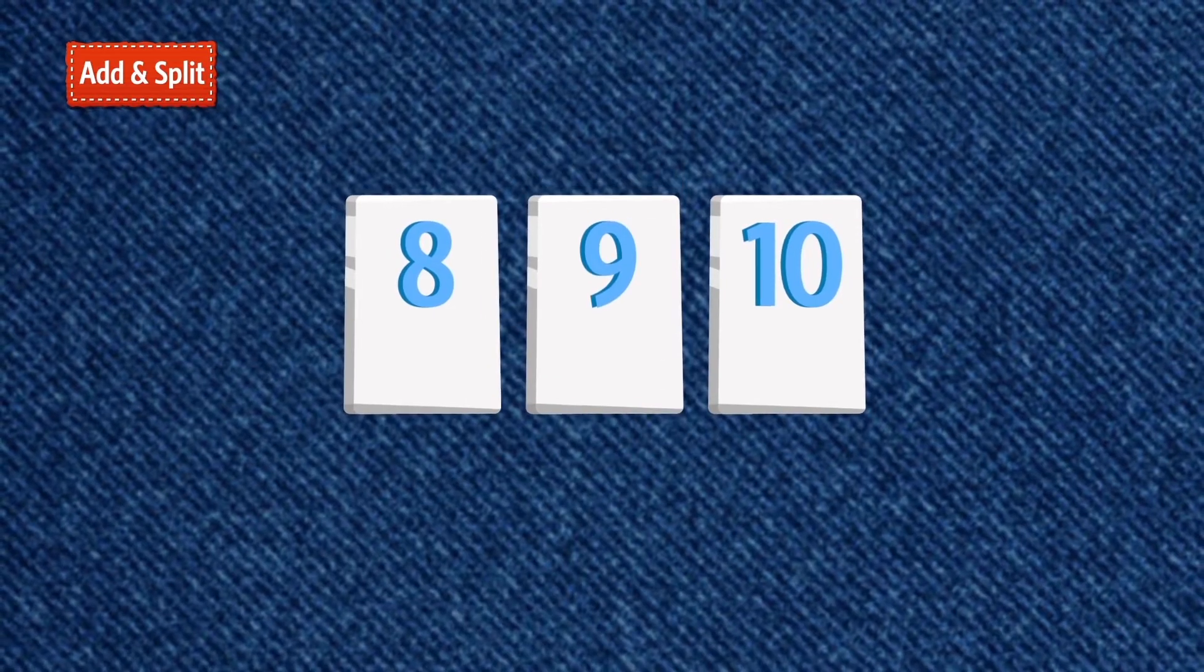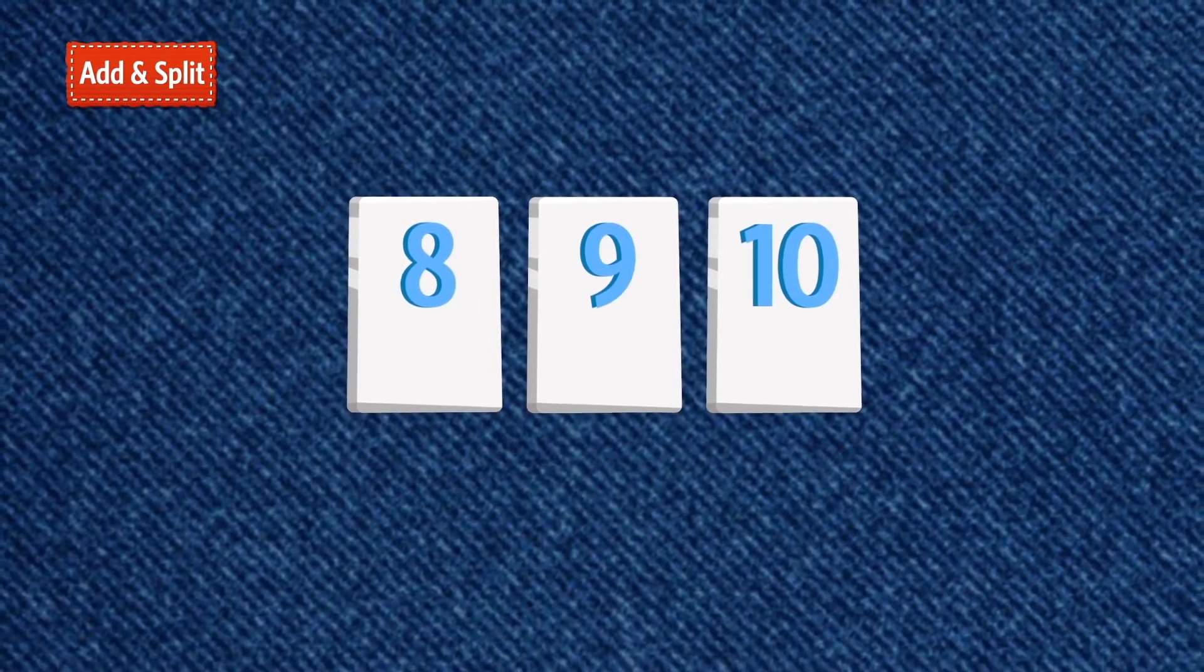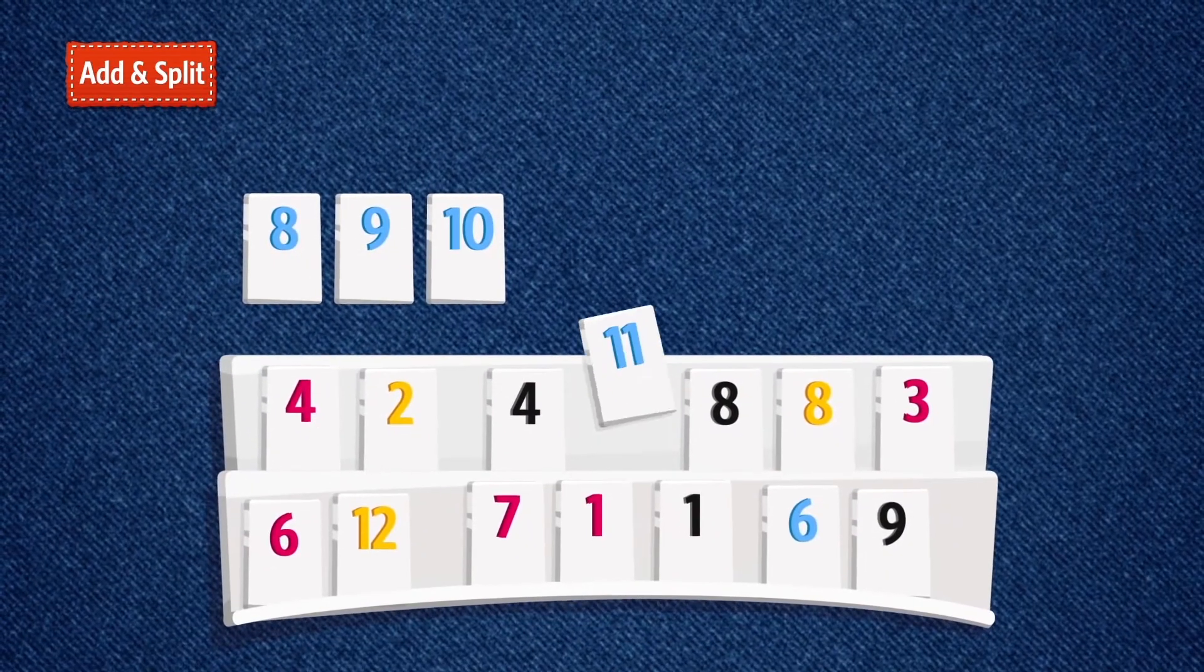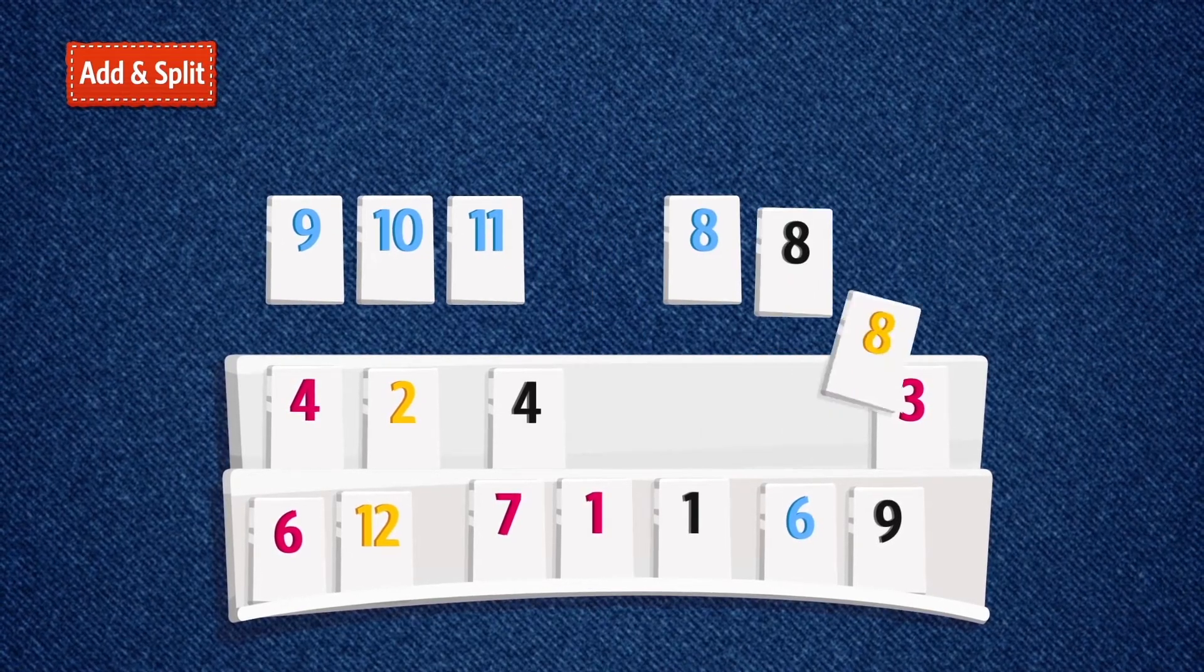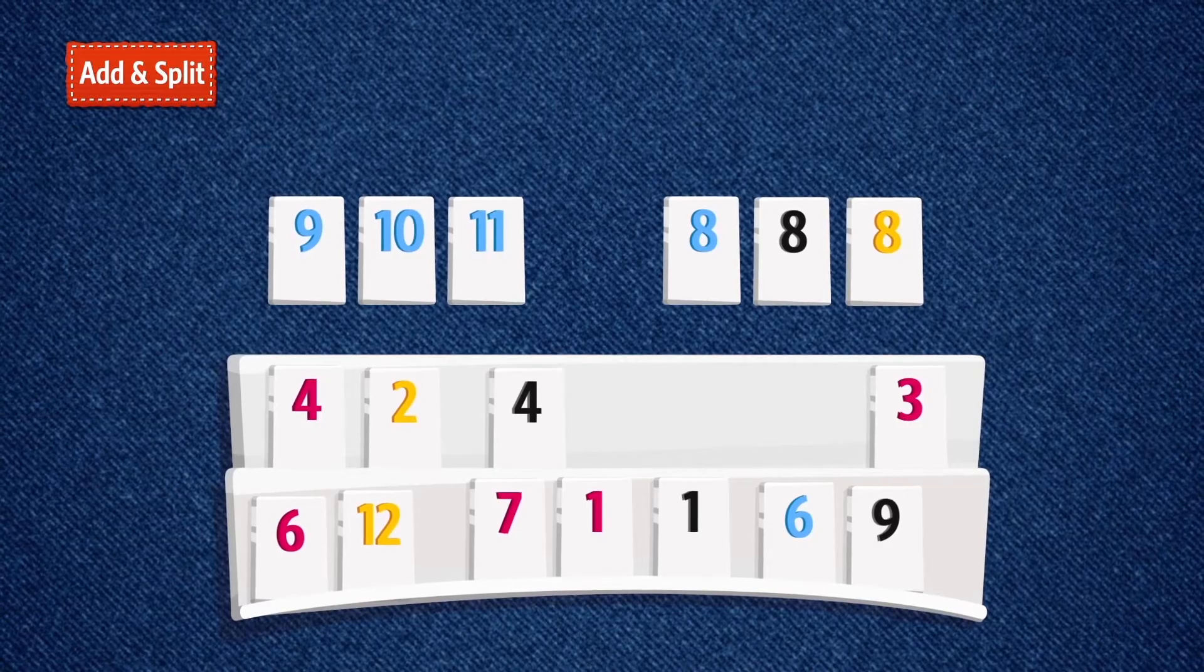Add tiles from your rack to a run and take what you can from that set to create new ones. Add the blue eleven to the blue run. Take the blue eight from the run and the eights from your rack and create a new group of eights.